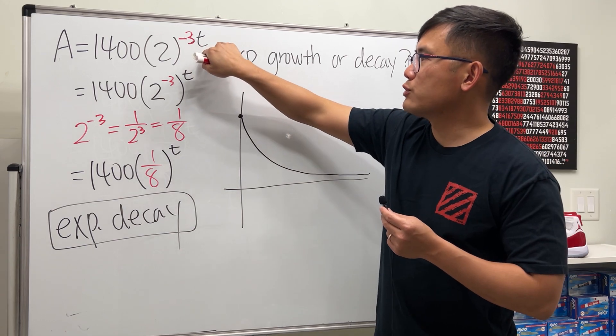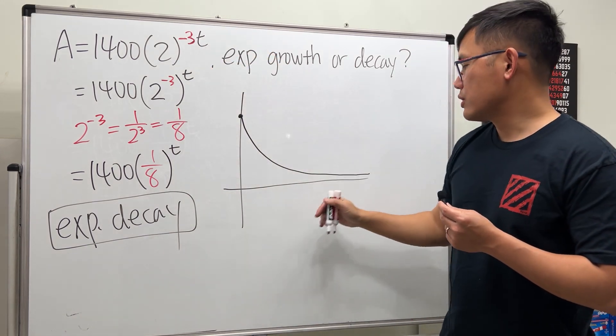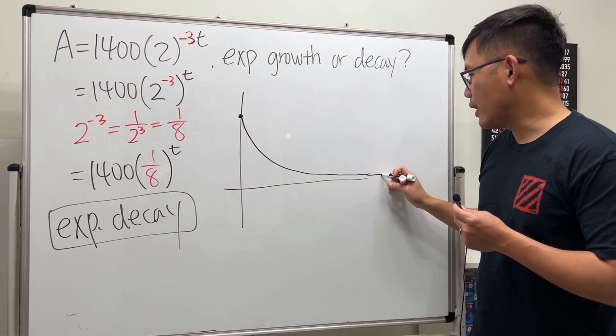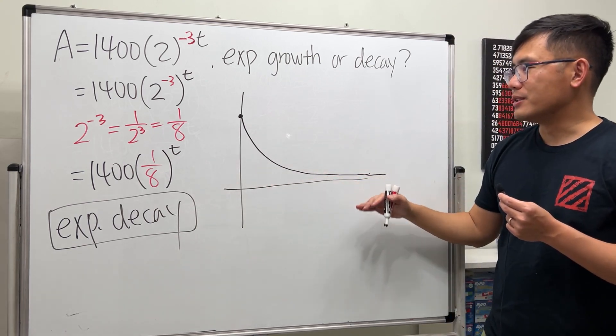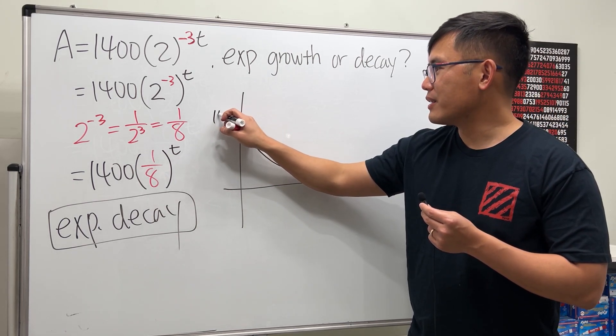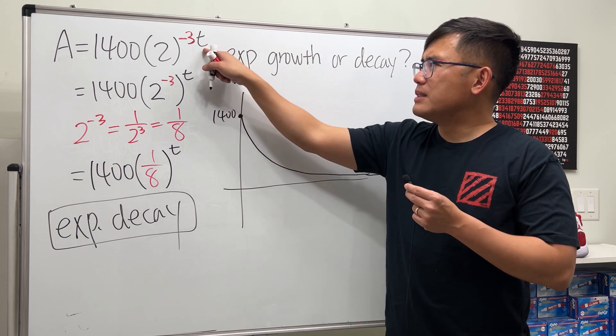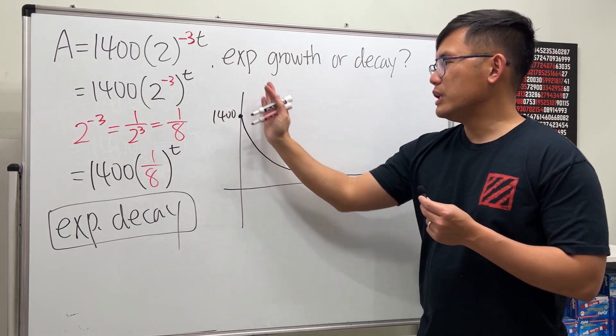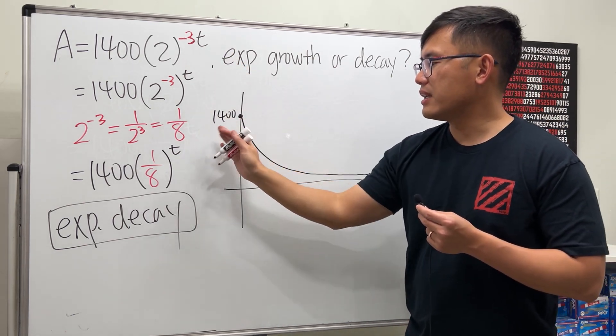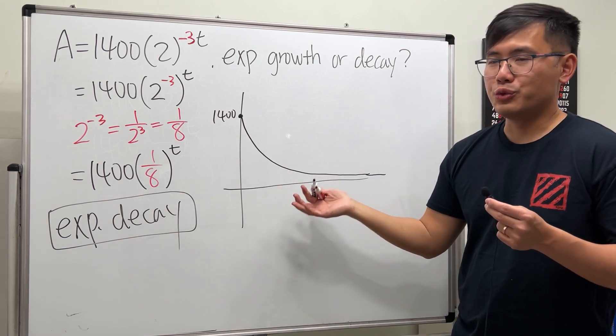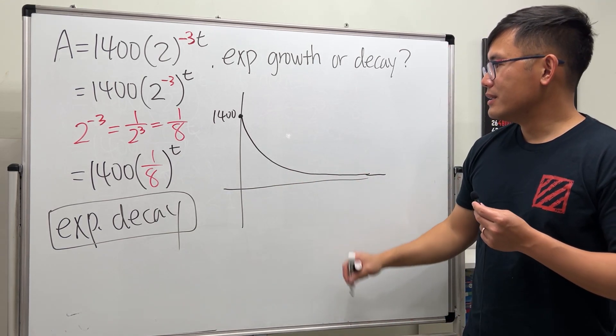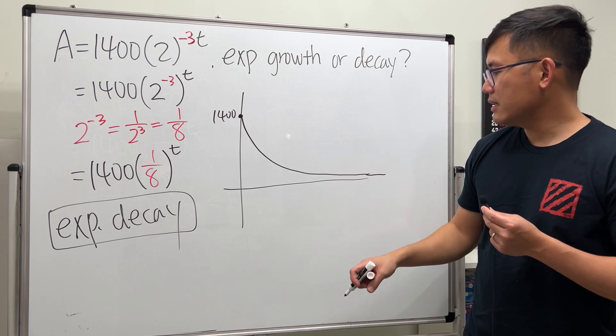Because there's no plus or minus any numbers at the end, we have a horizontal asymptote at y = 0. This is the starting 1400, and especially when we're talking about t, usually we don't pass the negative side because t is usually for time. So this right here is the graph for that.